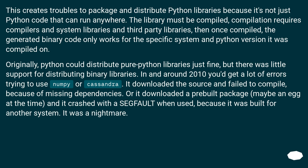Originally, Python could distribute pure Python libraries just fine, but there was little support for distributing binary libraries. In and around 2010 you'd get a lot of errors trying to use NumPy or Cassandra — it downloaded the source and failed to compile because of missing dependencies, or it downloaded a pre-built package (maybe an egg at the time) and it crashed with a segfault when used because it was built for another system. It was a nightmare.